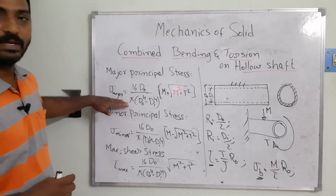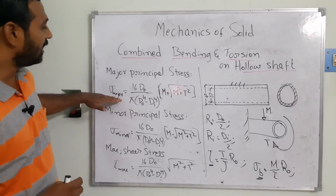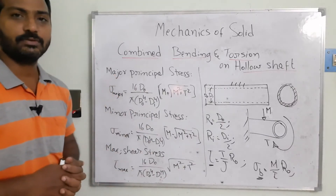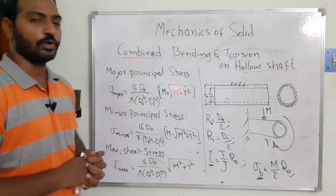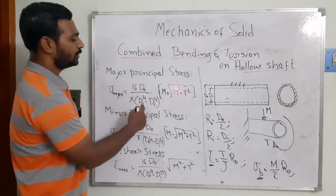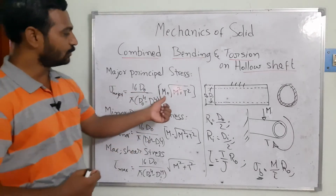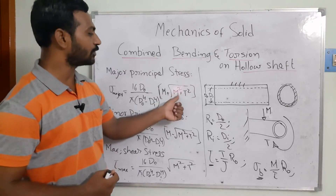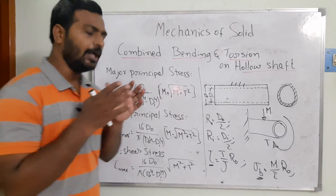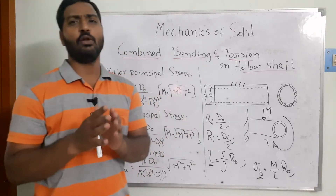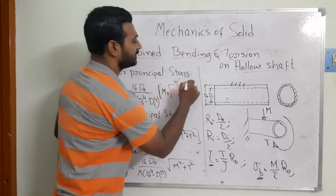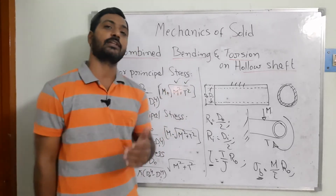Substituting these values into the equations, the maximum principal stresses are: σ_major = (16 × D-not) / (π × (D-not⁴ − D-i⁴)) × (M + √(M² + T²)). We can see that in the governing equation, both the torsional loads and the bending loads are present together, which is why the theories of failure are of main importance — to find the resultant components when two or more forces are acting.